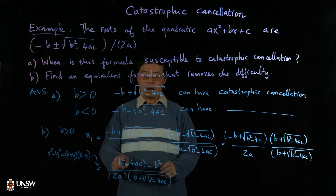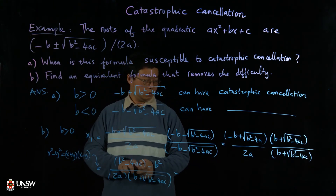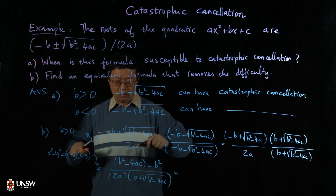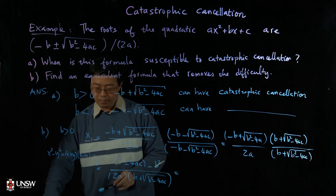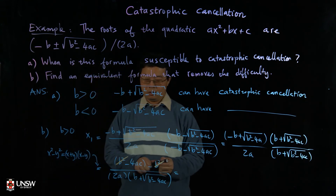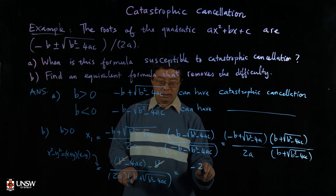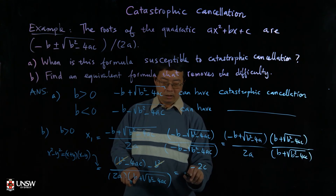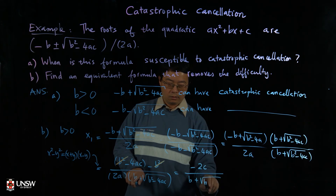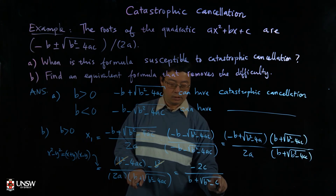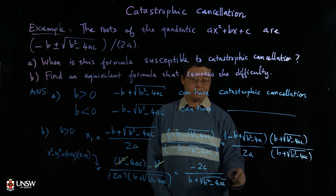Now b² cancels with b², so we just have −4ac divided by 2a, which simplifies to −2c divided by (b + √(b²−4ac)). And you can see there is no more catastrophic cancellation.